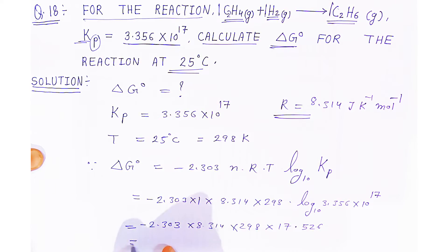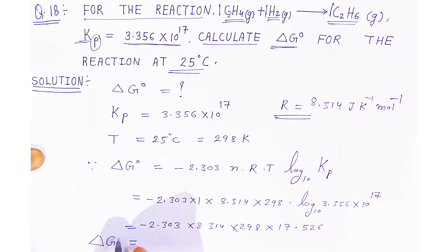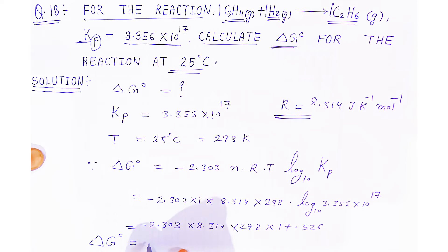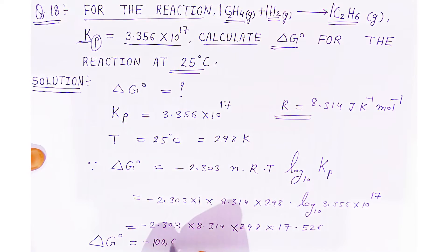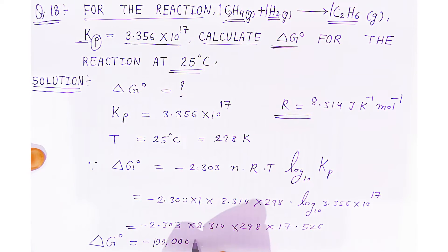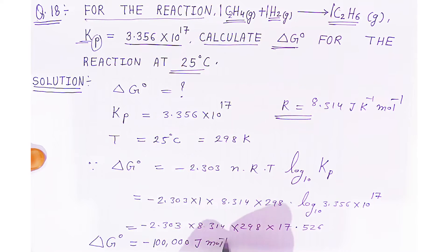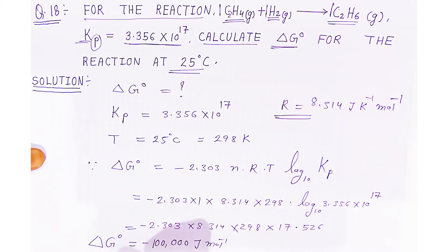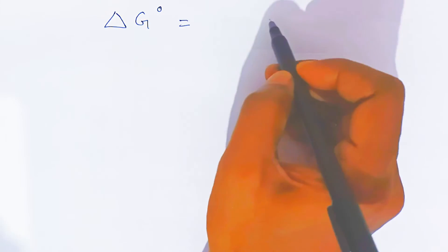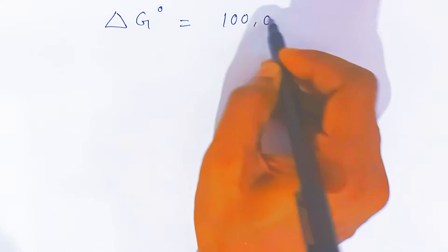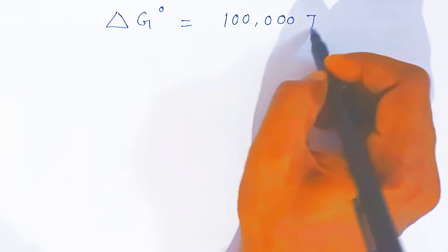When you multiply with the help of the log table, you will get the value of change in standard Gibbs energy in negative, that is -100,000 Joules per mole.